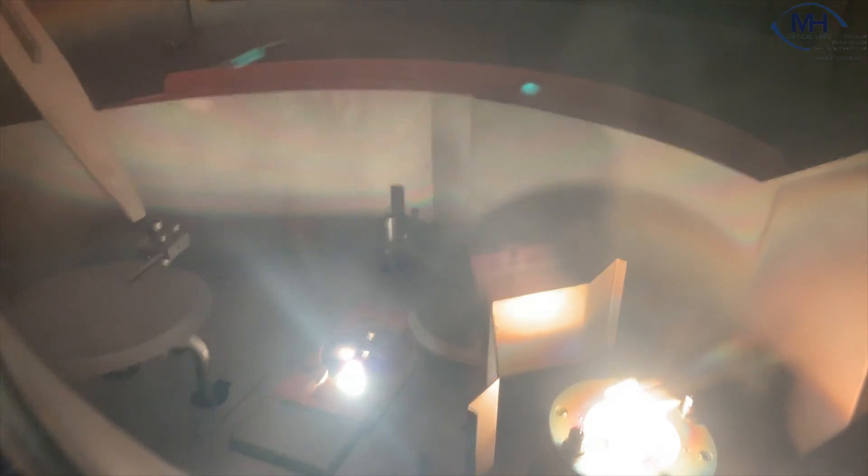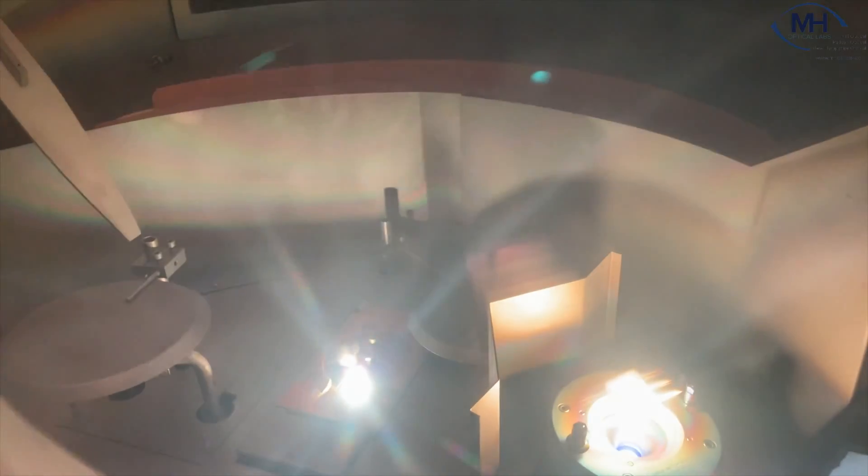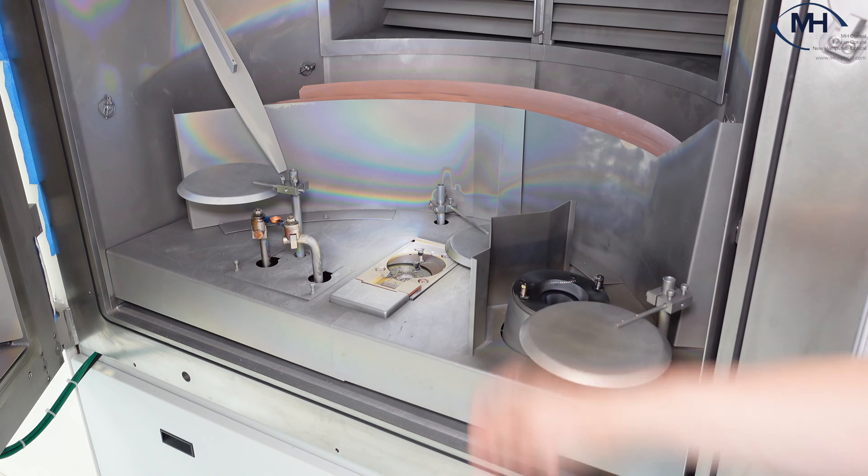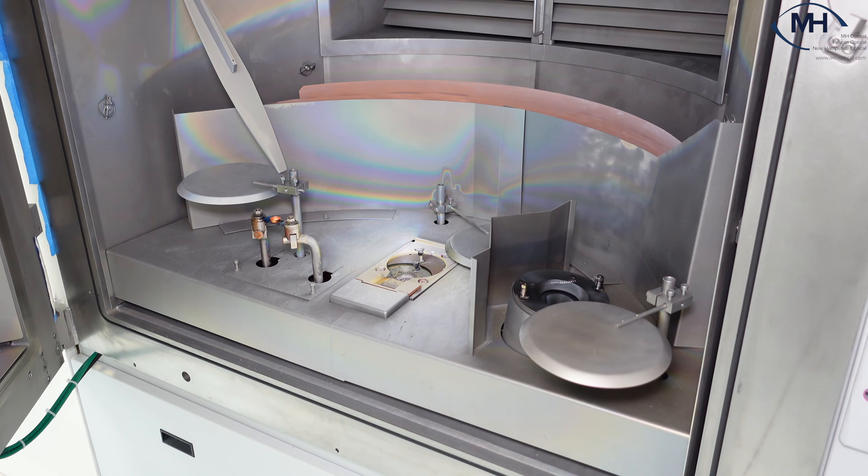Before they had ion sources in box coaters or AR coaters at all, we used to have to run everything through an ultrasonic cleaner. That way it roughed up the lenses just like the ion source does. Now we do that anyway with our spin coat work, but for our dip coat work we used to have to run it back through an ultrasonic water bath to etch those lenses so the AR stack would adhere to it. Now with these ion sources we don't really have a problem with that.